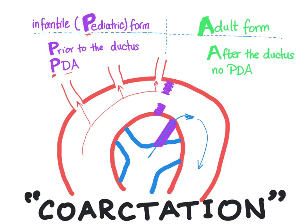In the adult form, the coarctation occurs after the ductus — like here. So the coarctation is located after the ductus, and there is no PDA, meaning the ductus arteriosus is occluded. This means we will not have the problem of lower extremity cyanosis.